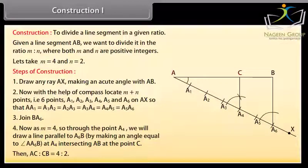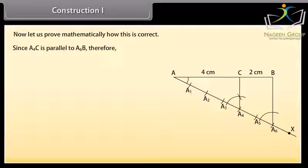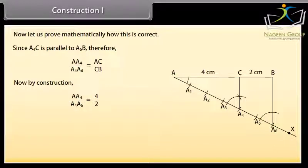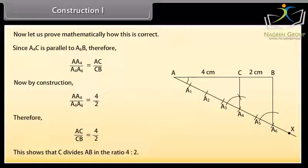Then AC is to CB is equal to 4 is to 2. Now let us prove mathematically how this is correct. Since A4C is parallel to A6B, therefore by the basic proportionality theorem, AA4 upon A4A6 equals AC upon CB. Now by construction, AA4 upon A4A6 equals 4 upon 2. Therefore AC upon CB is equal to 4 upon 2. This shows that C divides AB in the ratio 4 is to 2.